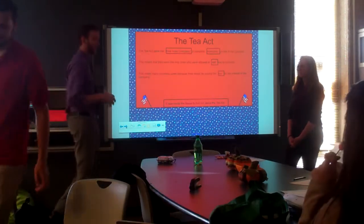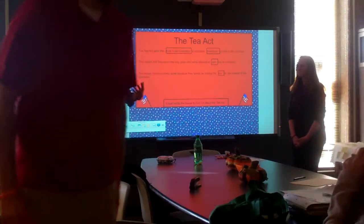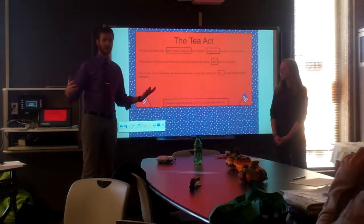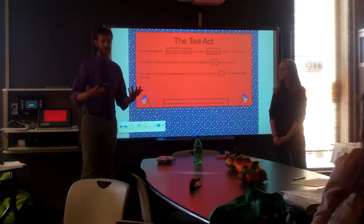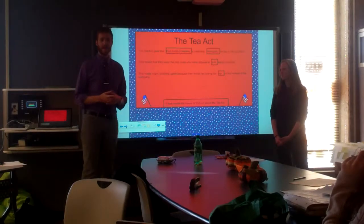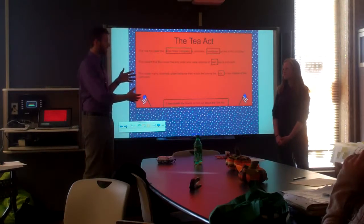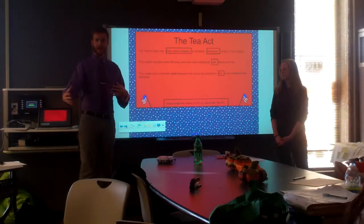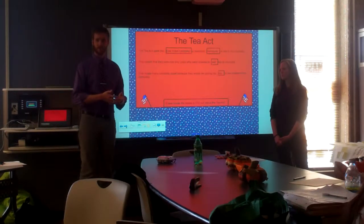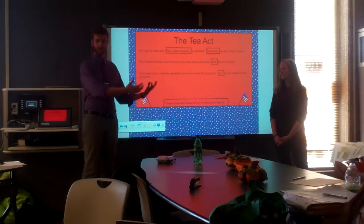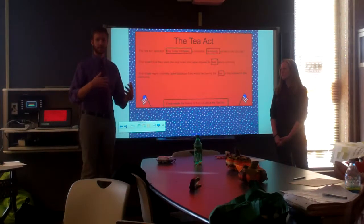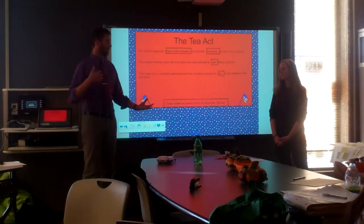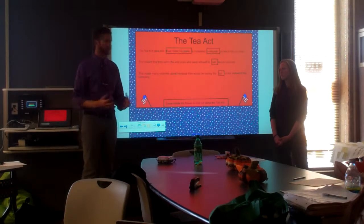In the novel My Brother Sam is Dead, it focuses around a family called the Meekers in Redding Ridge, Connecticut, and they own a tavern. These taxes really show their effect in that novel because the Meekers are constantly going through financial struggles. They were once flourishing, but during all these taxes, they really started struggling to get what they need — tea, rum, and other things you'd have at a tavern.